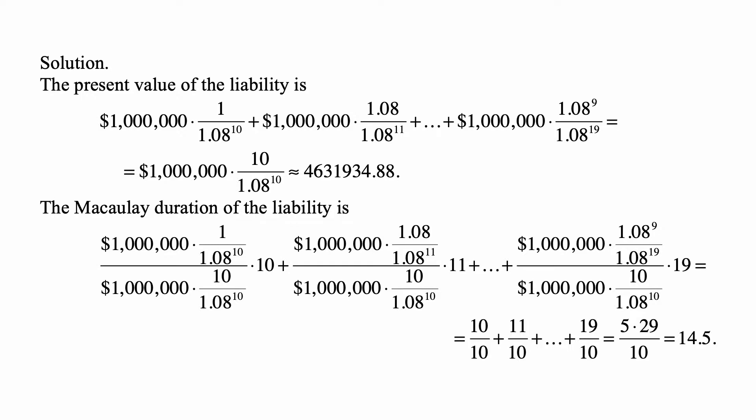Present value, also divided by a million times 10 over 1.08 to the tenth, times 11, this time of a second payment, and so on, through the last one, which will be a million times 1.08 to the ninth over 1.08 to the nineteenth, divided by a million times 10 over 1.08 to the tenth, and the whole thing multiplied by 19, which is the time of the payment.